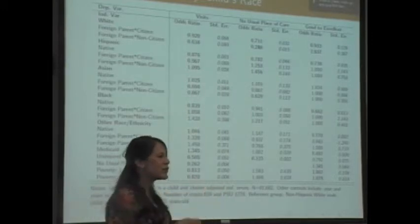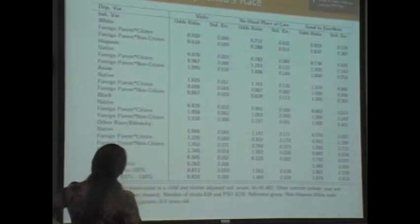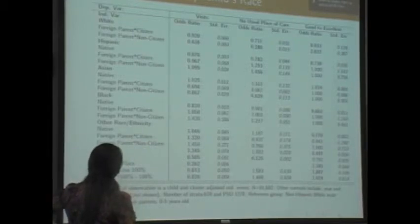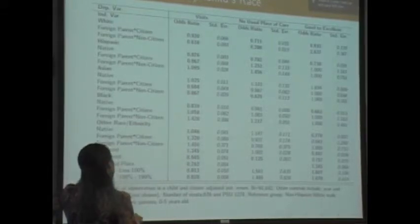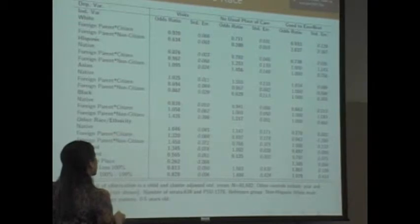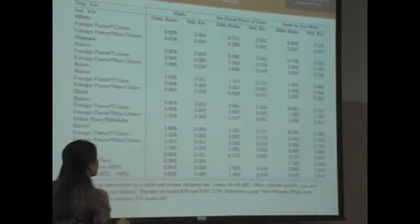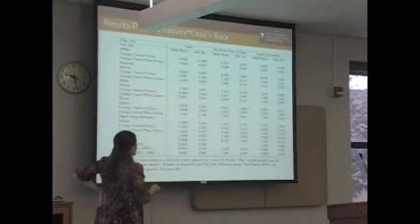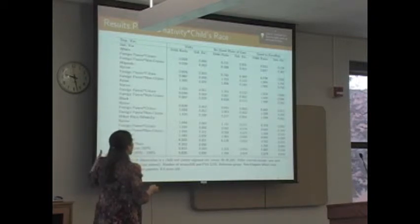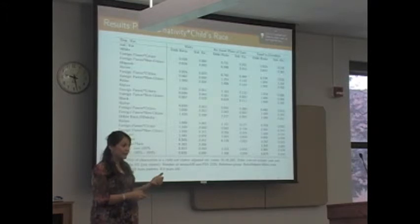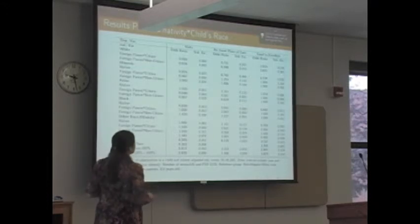This is very interesting, because even for white foreign-born citizens and non-citizen children, having a foreign-born parent still reduces the odds of having visited the doctor and reduces the odds of having a usual place of care. For citizen children of foreign-born parents, the odds of having good to excellent health are lower than for a white American child of American parents. But a foreign-born parent's non-citizen white child has higher odds of being in good health.